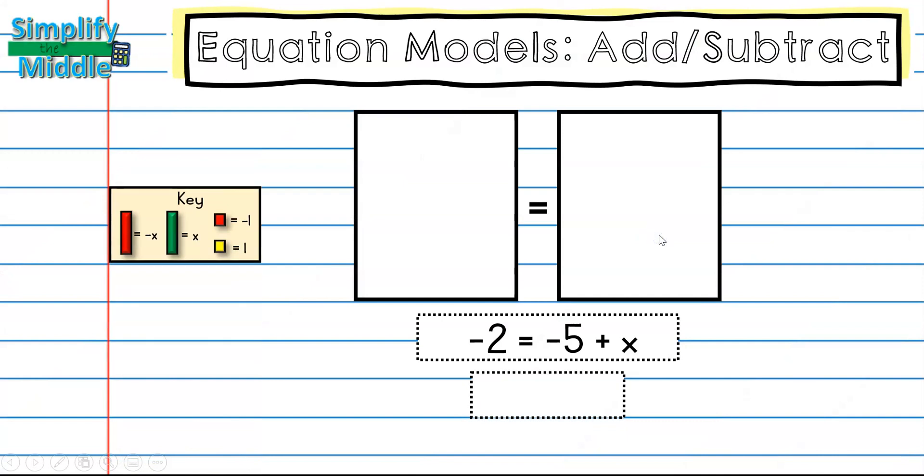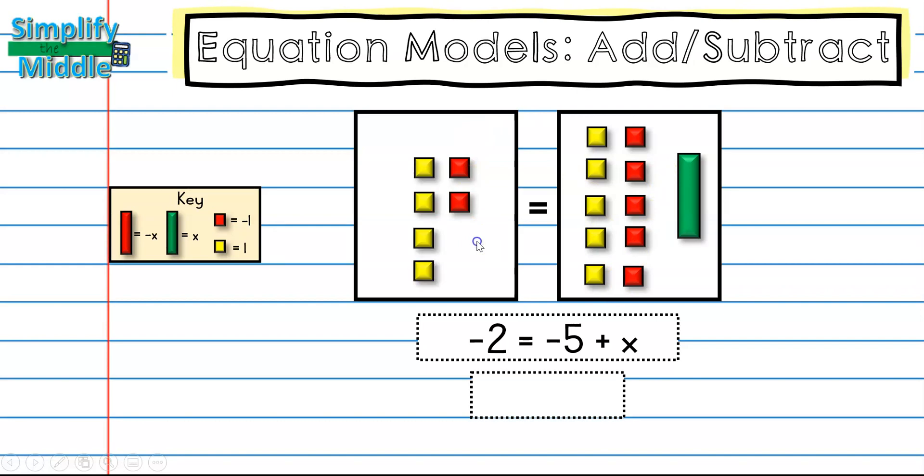For our last example, on this side we have negative two, so I'm going to put two red tiles and x. To isolate my variable, I want to get rid of these five red tiles, so I'll add five yellow tiles. Whatever I do to one side, I need to do to the other, and then I cross out my zero pairs. So my answer here is positive three equals x.